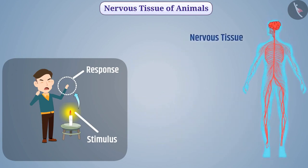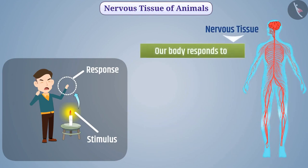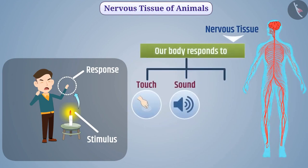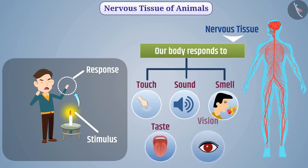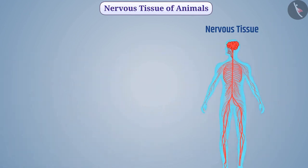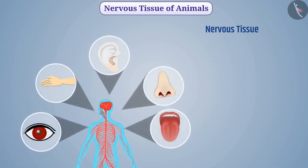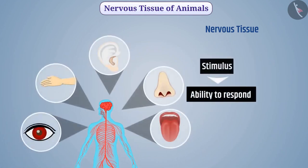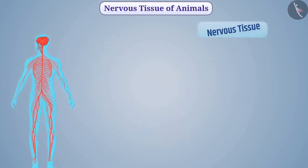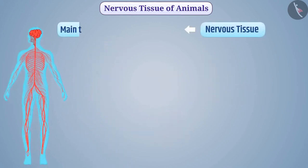The nervous tissue present in our body responds to touch, sound, smell, taste, and vision. Therefore, all cells of the body have the ability to respond to stimulus.